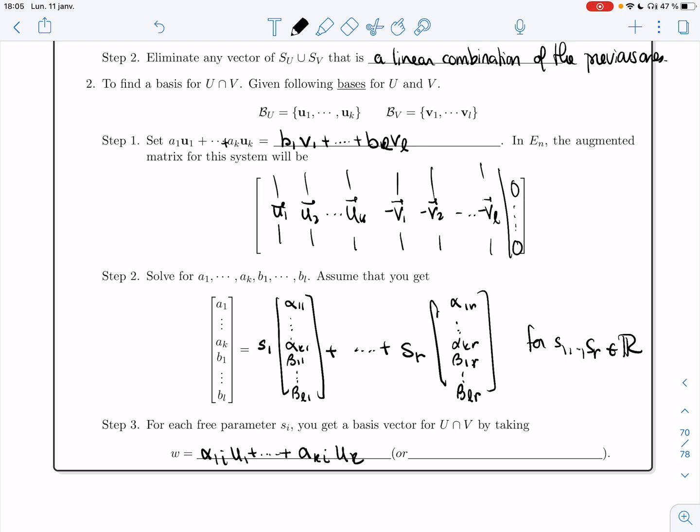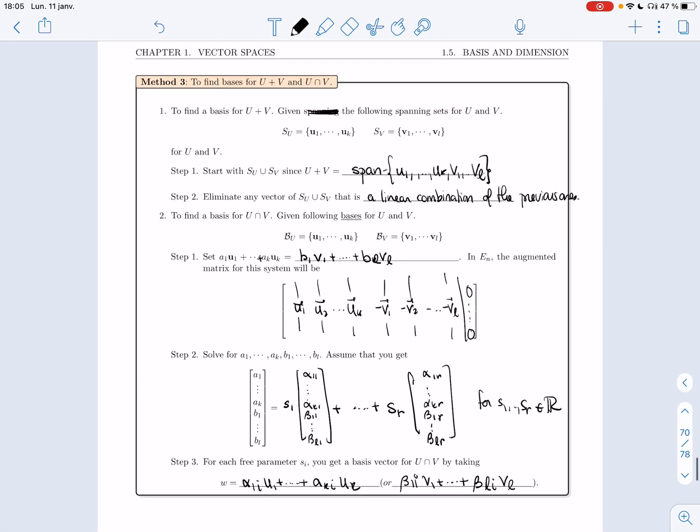Or if you felt like it, you could take β₁,ᵢ*v1 + ... + βₗ,ᵢ*vl. Either formula gives you the same basis vectors for U intersection V. All right, so that recaps the method.